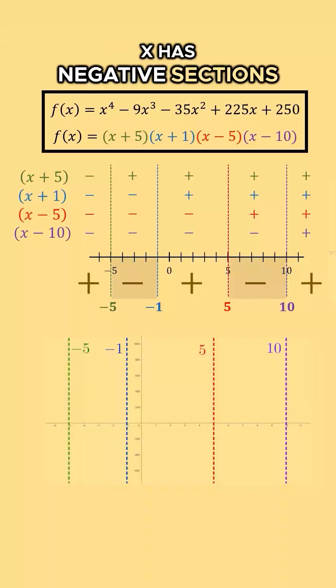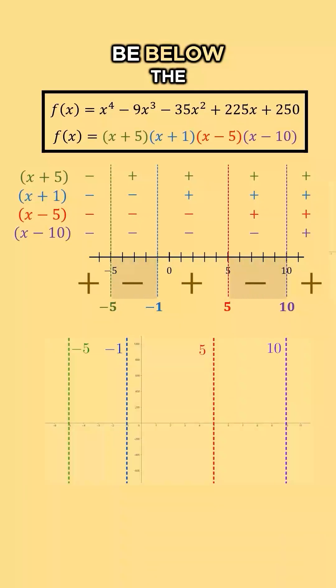When f has negative sections, our function will be below the x-axis whenever x is in that range.